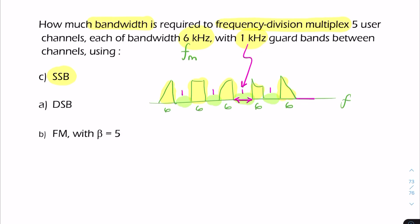The total bandwidth will be 6 times 5 plus 4 times 1. That's your guard bands. For SSB, that gives you a total of 34 kilohertz.